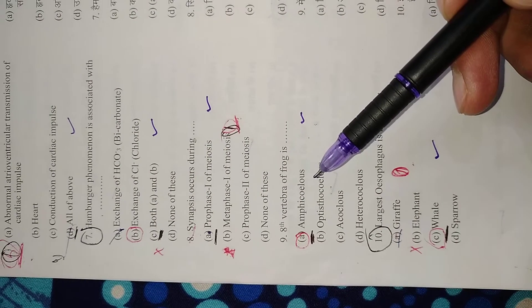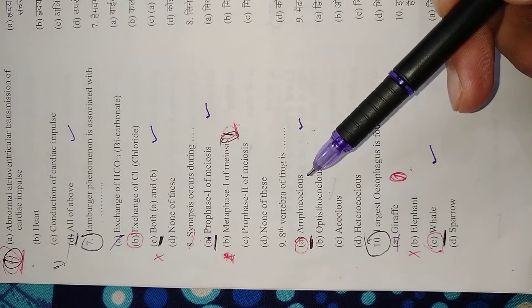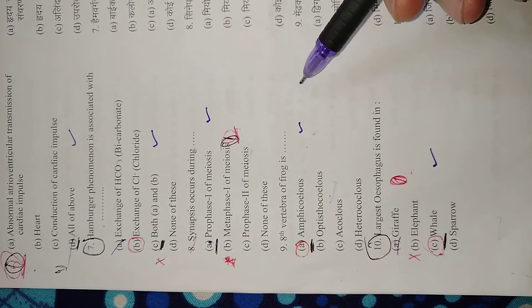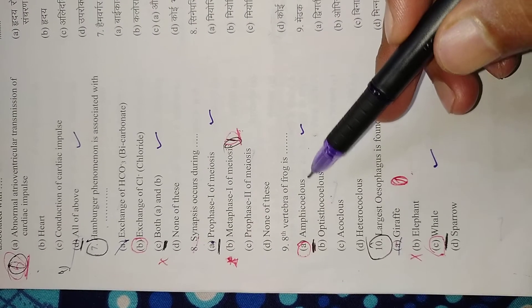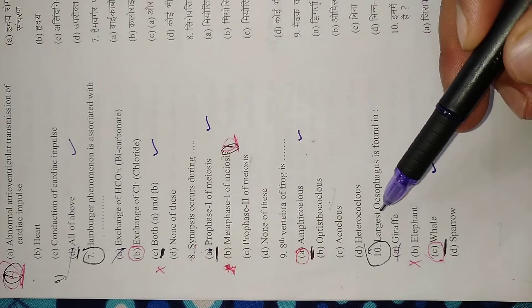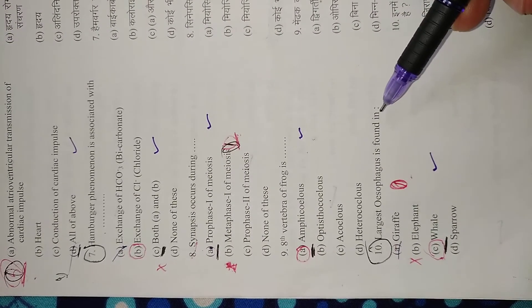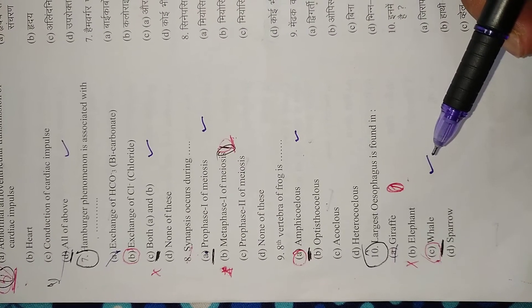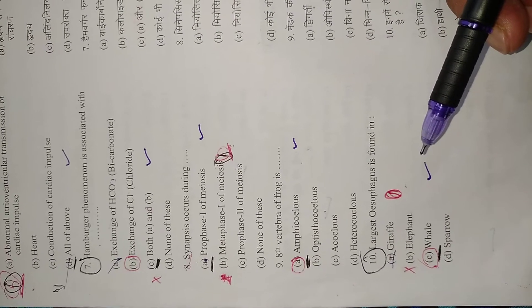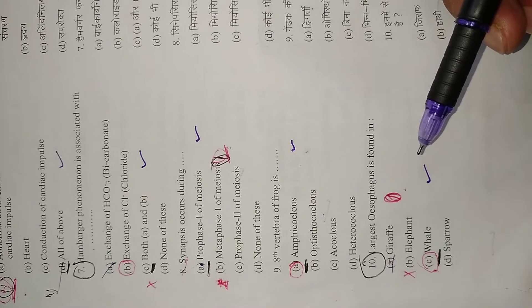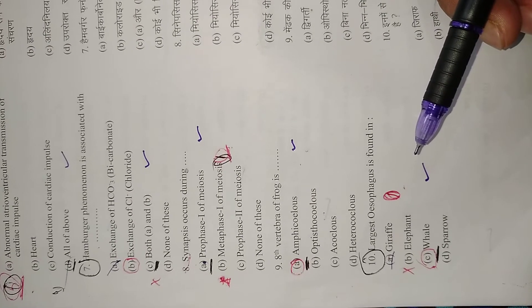Question 9: 8th vertebra of frog is amphicoelous type - there is concavity on both sides. Right option is A. Question 10: Largest esophagus is found in? According to the official answer key, they've given option C, but according to me it is giraffe A.